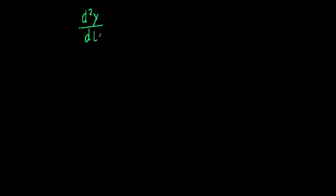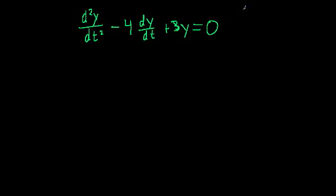Now we're finally ready to start learning how to solve higher order differential equations. The differential equation we'll be working on today is the second derivative of y with respect to time minus 4 times the first derivative plus 3y is equal to 0. We want to find a function y, a function of time, that satisfies this differential equation for all values of t.